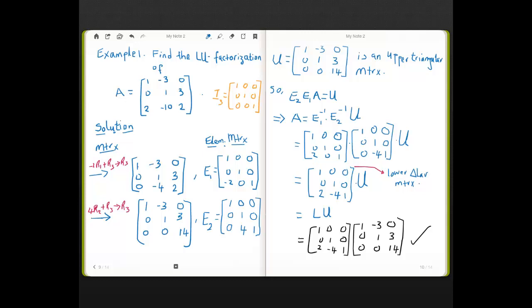We set U to be our upper triangular matrix: 1, negative 3, 0; 0, 1, 3; 0, 0, 14. So, from our lecture, that means E_2 times E_1 times A equals U, i.e. A equals E_1 inverse times E_2 inverse times U. The product of these two elementary matrices should give you a lower triangular matrix. E_1 inverse times E_2 inverse actually gives us a lower triangular matrix. So, this is our L right here, which is the result of E_1 inverse and E_2 inverse. We end up with LU, lower triangular matrix, upper triangular matrix. Now, we have the LU factorization of A.